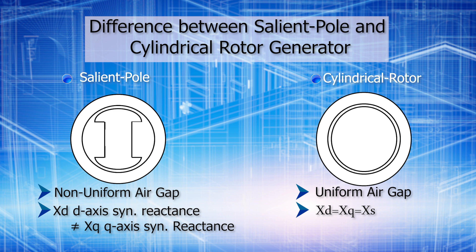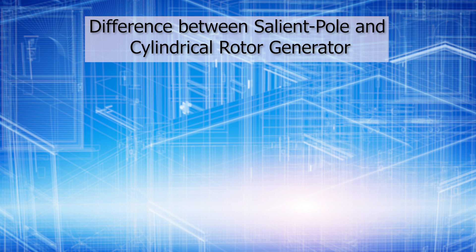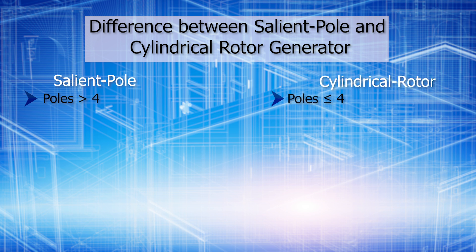All these features make the salient pole more suitable for low speed operation, whereas cylindrical rotor is preferred for high speed. In salient pole, the number of poles is generally more than 4; in cylindrical rotor, the number of poles is less than or equal to 4. More than 4 poles means slow speed; less than or equal to 4 means quite high speed. Under faulty conditions, salient pole has more chances of rotor deformation due to non-uniform air gap and air resistance, whereas cylindrical rotor has less chances of deformation due to its smooth surface and uniform air gap.